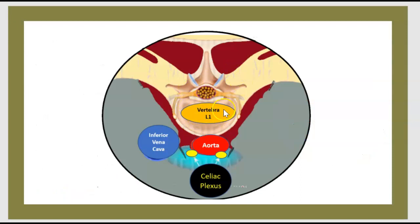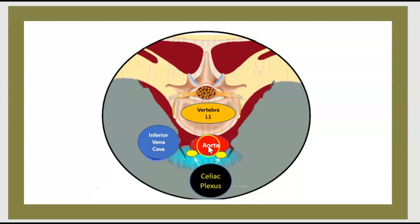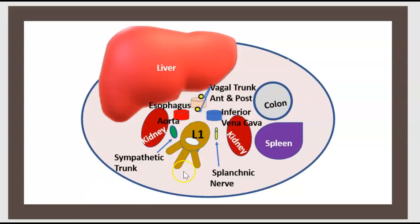We are at the level of the first lumbar vertebra. Here is the aorta, the inferior vena cava, and the celiac plexus in front of the aorta. To illustrate further: this is the L1 vertebra, here is the kidney, here is the liver, the spleen, and the colon.